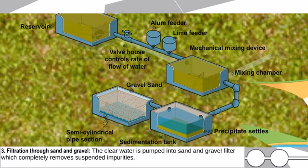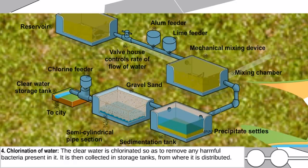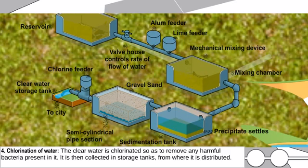Stage three: filtration through sand and gravel. The clear water is pumped into a sand and gravel filter, which completely removes suspended impurities. Stage four: chlorination. The clear water is chlorinated so as to remove any harmful bacteria present in it.